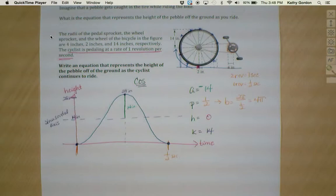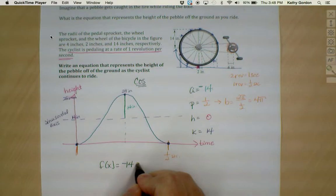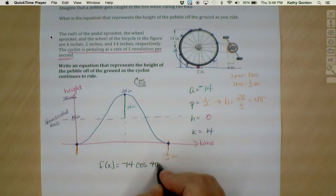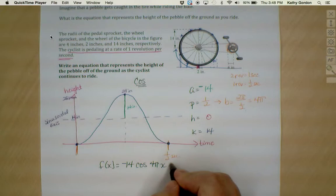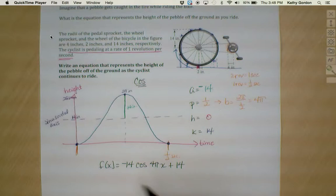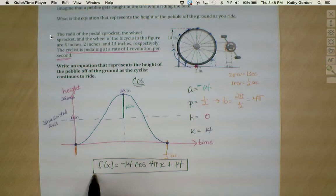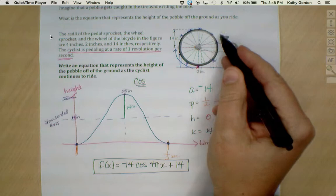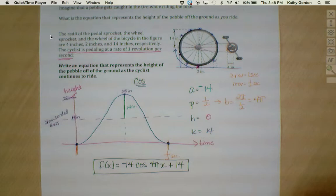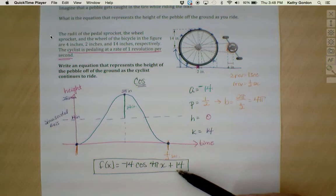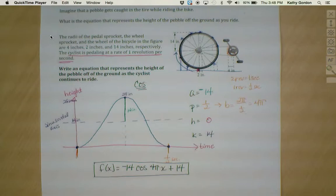Now that I know all of the pieces, I should be able to put this together into a final equation. My function is that f of x equals a, negative 14, times the cosine of b, 4 pi, times x, with no h added or subtracted, and then plus my k value of 14. This is the trigonometric equation that represents the height of the pebble as it rotates around the wheel as the cyclist continues to ride. Negative 14 cosine 4 pi x plus 14.